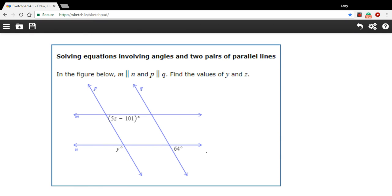In this problem, instead of one pair of parallel lines being crossed by a single transversal, we've got one pair of parallel lines being crossed by another pair of parallel lines.